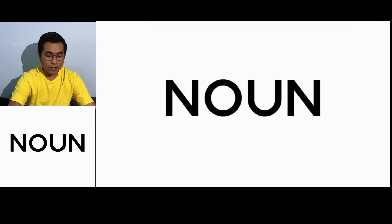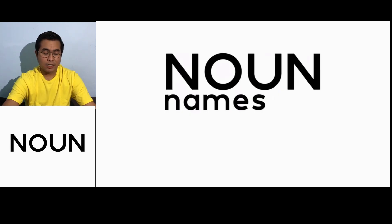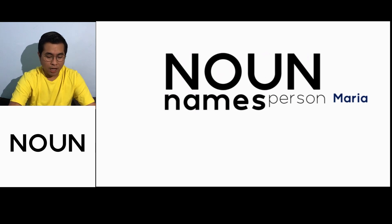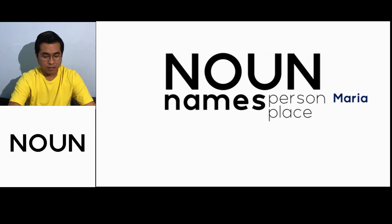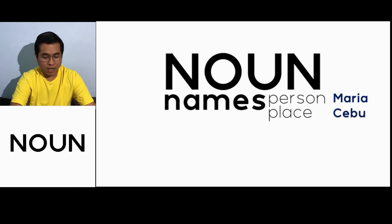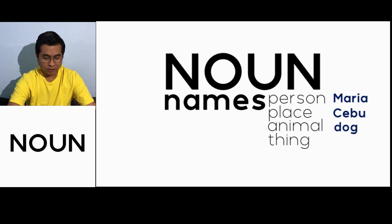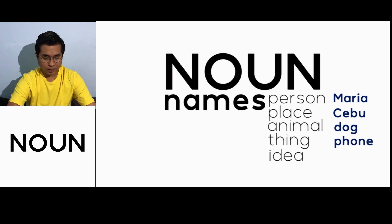The first thing about nouns is that we have to remember that a noun names a person — for example, Maria. And then we have place, for example, Cebu, here in the Philippines. Then we have animal, like dog. And we have a thing, like a phone. And we have idea, like courage.